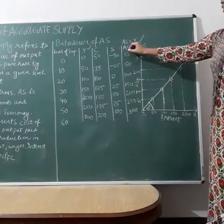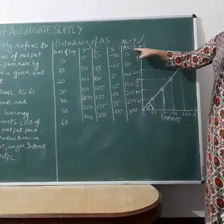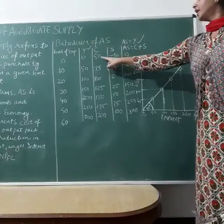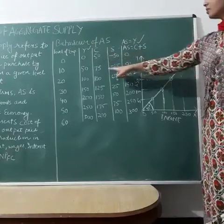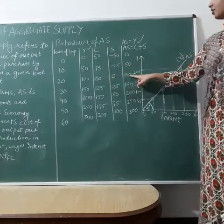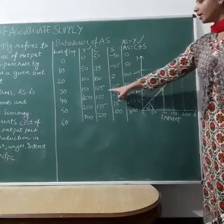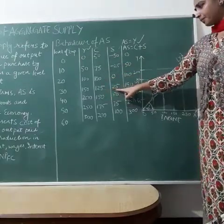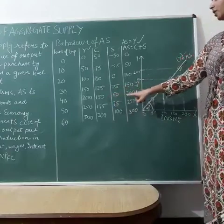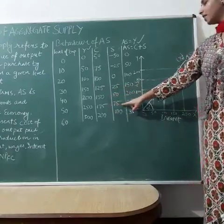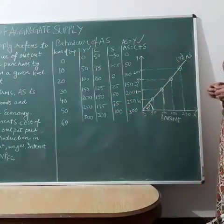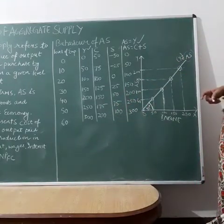Now we calculate aggregate supply, which equals C plus S — consumption plus savings. So: 50 + (−50) = 0; 75 + (−25) = 50; 100 + 0 = 100; 125 + 25 = 150; 150 + 50 = 200; 175 + 75 = 250; 200 + 100 = 300.